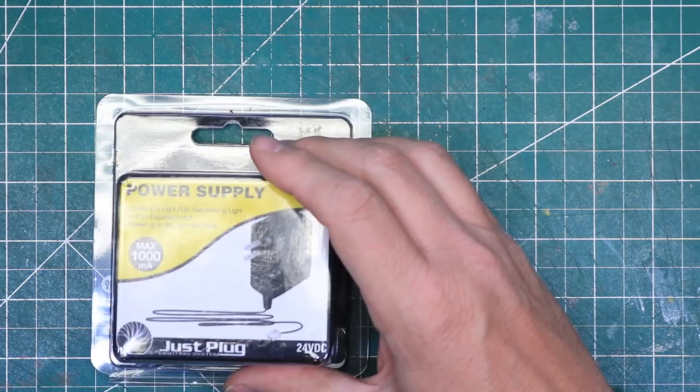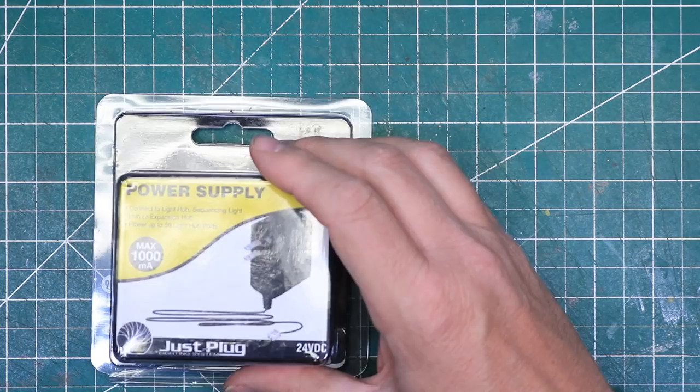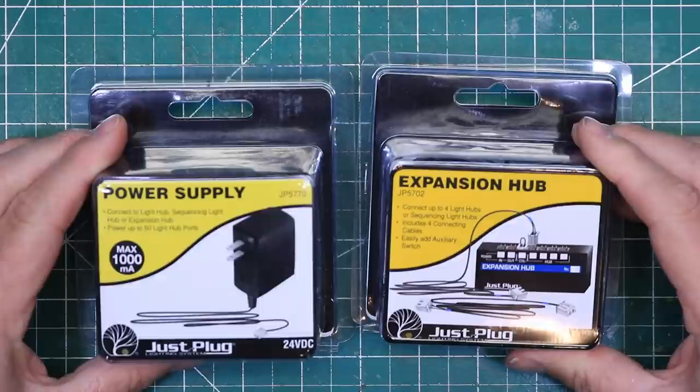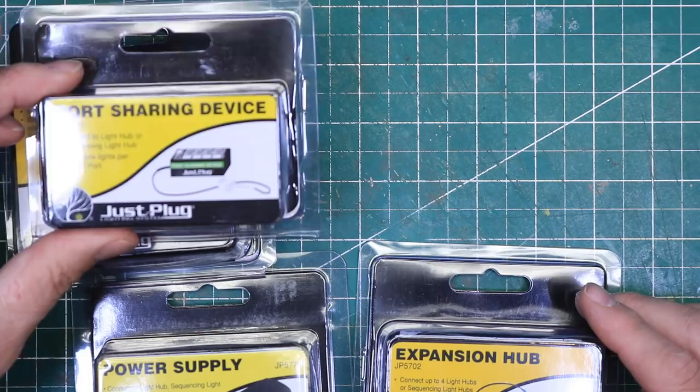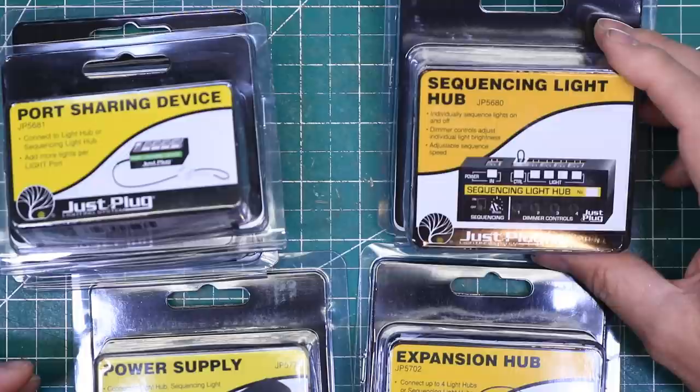so I used one expansion hub, one light hub, one port sharing device, and one sequencing light hub, as well as the power supply. This allowed me to power 12 LEDs, with four of them turning on and off at random intervals and in a random sequence. All of the LEDs are dimmable through these systems, and the random sequence frequency can be adjusted with a sequencing hub as well. I'll share with you the cost of all of these items in just a few moments.